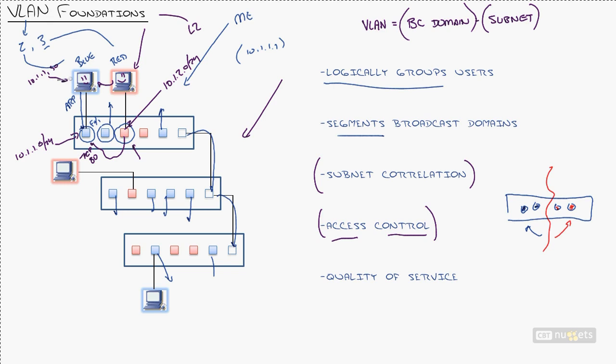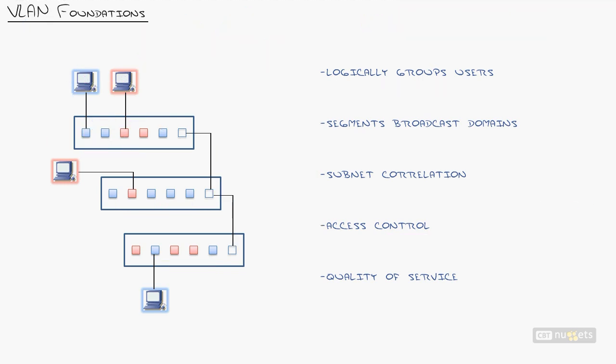If the blue VLAN sends a broadcast, it comes out all the blue ports. If the red VLAN sends a broadcast, it comes out all the red ports. What VLAN is that a member of? All of them, because those are known in Cisco land as trunk ports.